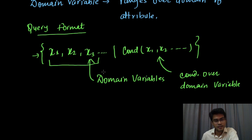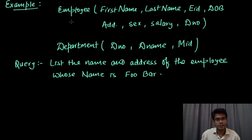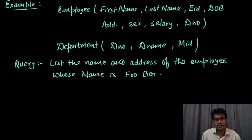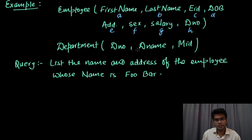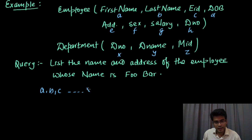Let us understand all these things with an example. We have been given an employee relation and a department relation. Employee has some attributes and department has some attributes. To start with in domain relational calculus we have to take domain variables — for each attribute of a relation we will take a domain variable. Let's take a for first name, b for last name, and similarly for others. For the department relation also we will take domain variables. So a, b, c, ... and x, y, z are domain variables.